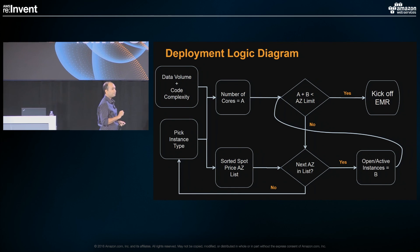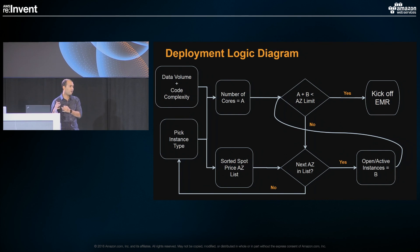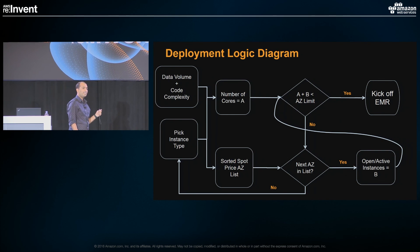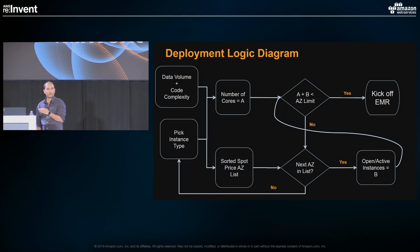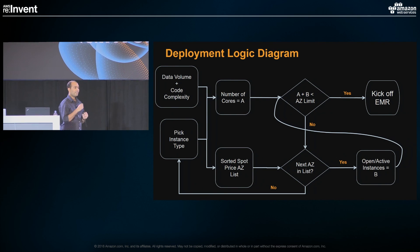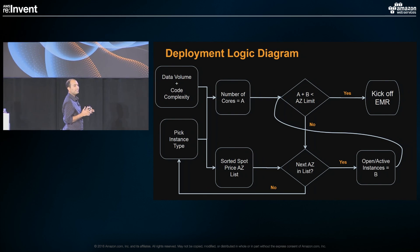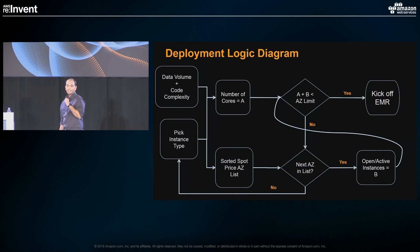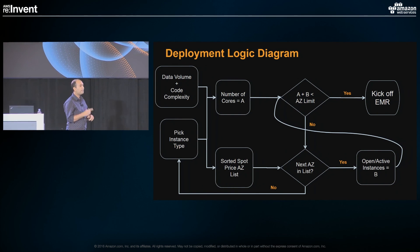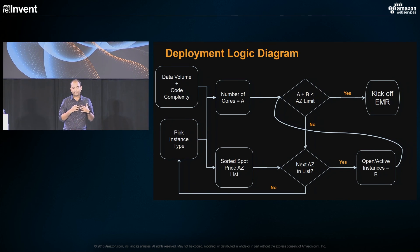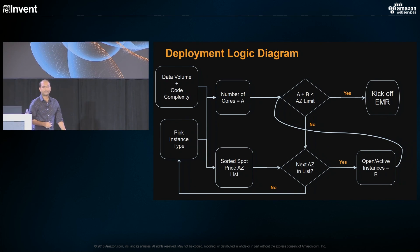To walk through our deployment logic: for a particular dataset, based on code complexity and data volume, we know how many cores we need. For that dataset, we know what instance types are acceptable, so we find the pricing for that instance type across all AZs. We pick the cheapest AZ and check how many requests are already running — call it B. If the cores required (A) plus B is less than our hard-defined limit, we kick off the EMR. If there's no bandwidth, we go to the next AZ, and if we run out of all AZs, we go to the next instance type. This cycle repeats, spreading our workload across multiple AZs. It has rarely happened that we've exhausted all AZs, even with 20,000 EC2 instances.